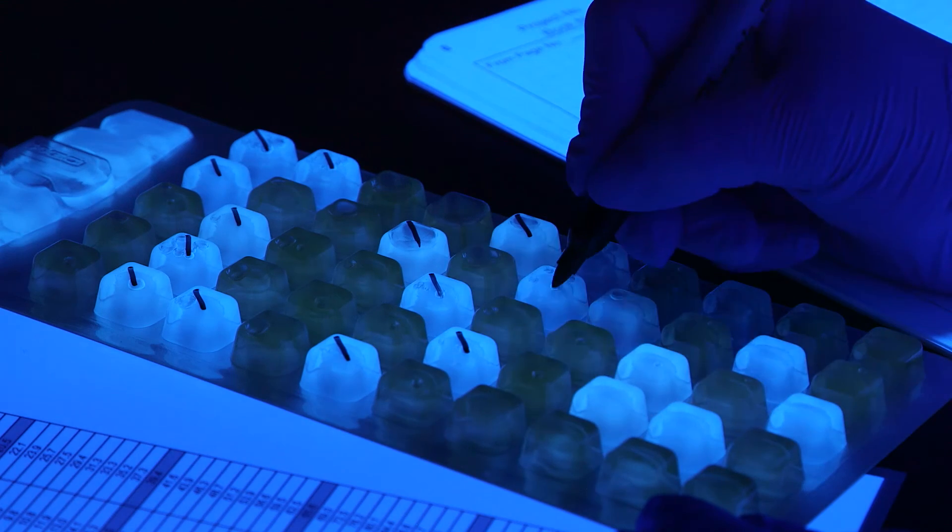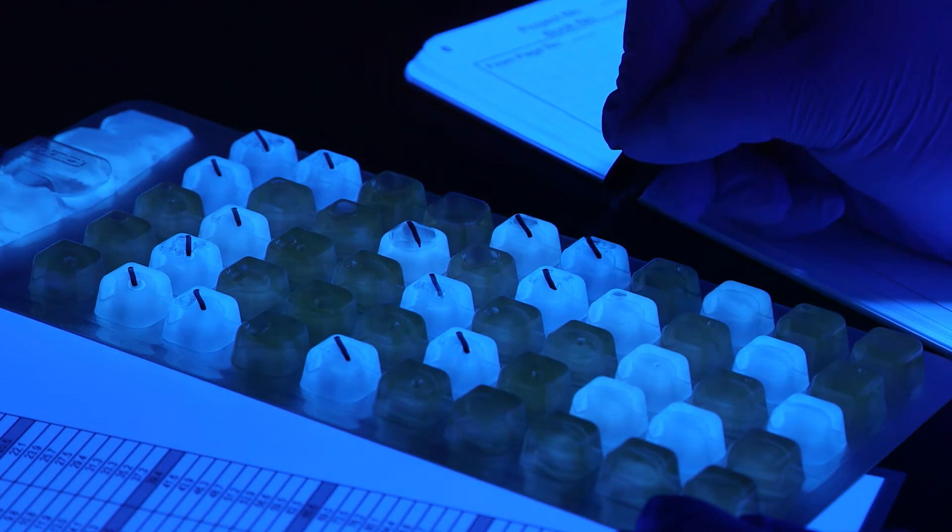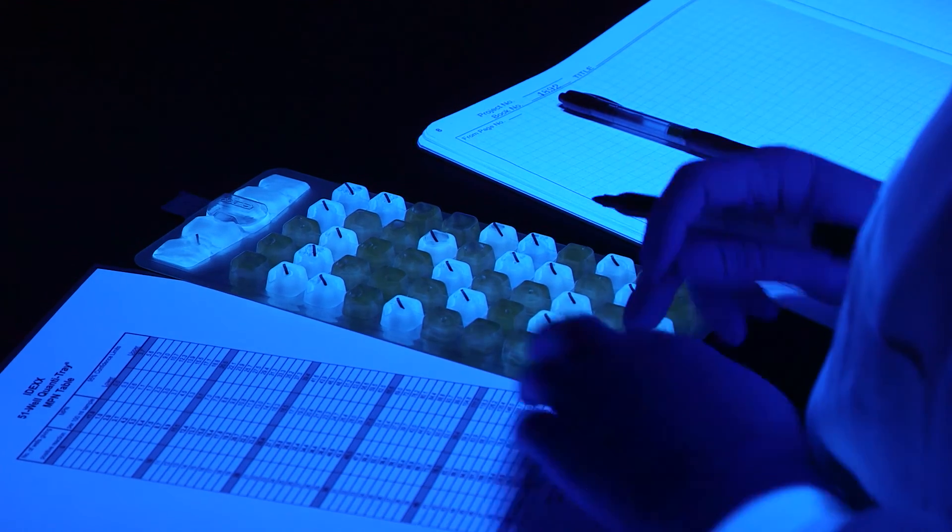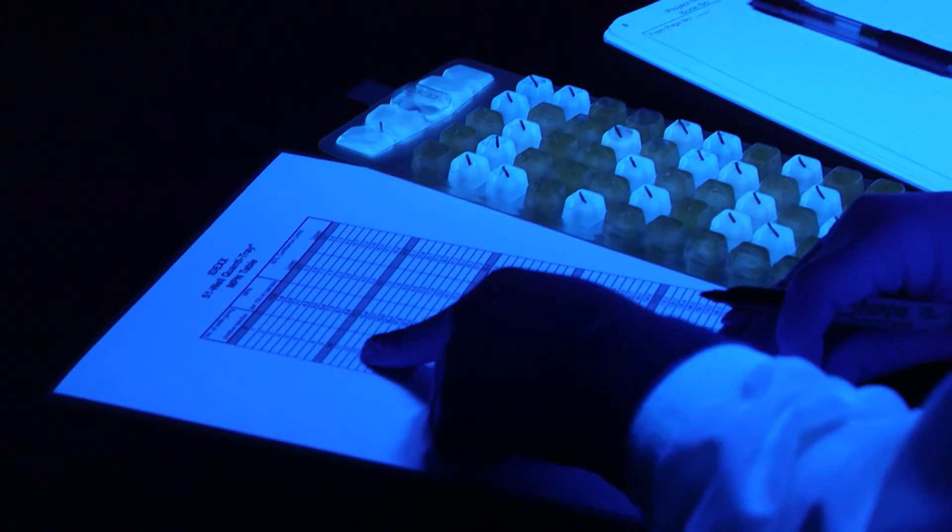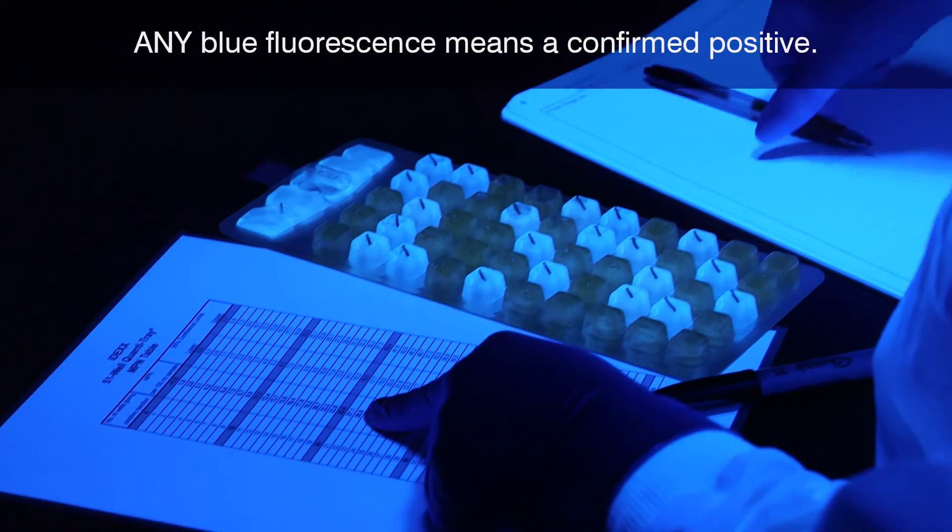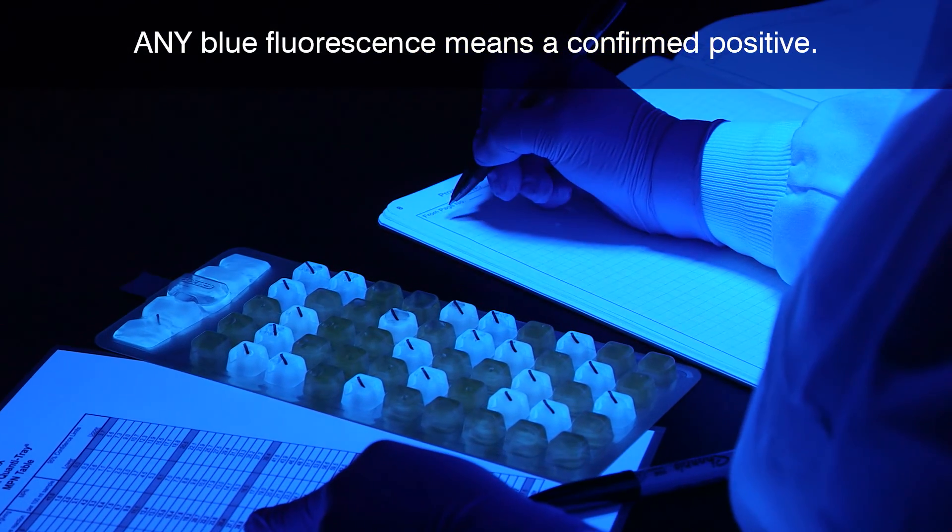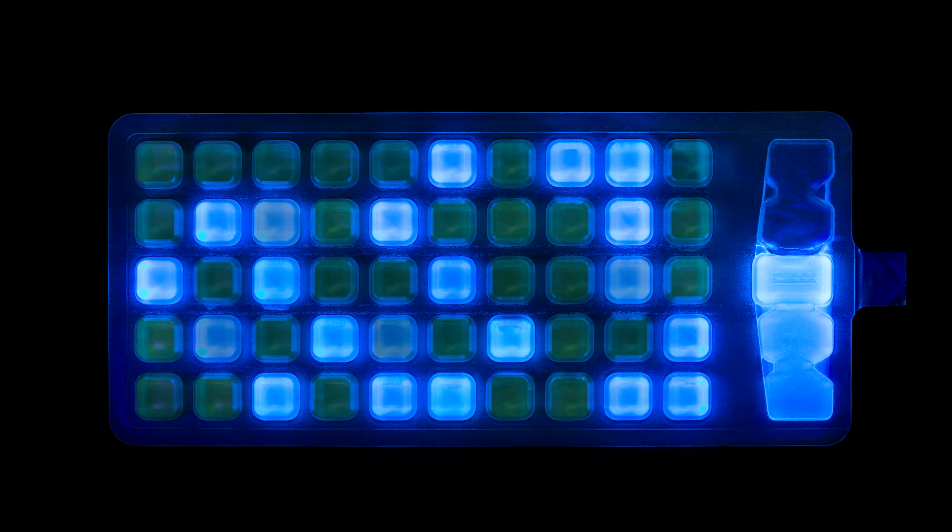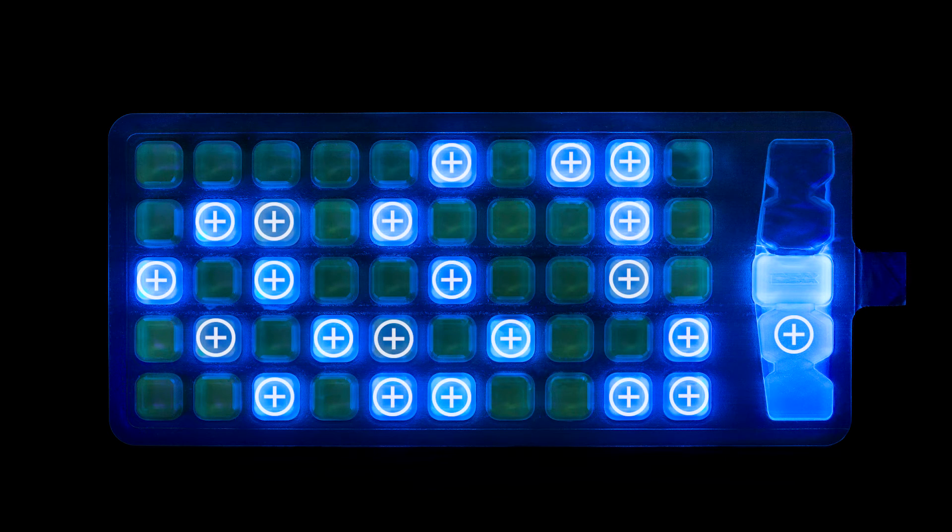Count the marked wells and then refer to the MPN table included with the Quantitrays. The most probable number for this example is 28.8 per 100 ml. If using Quantitray 2000, count the overflow well as a large well. Any blue fluorescence means a confirmed positive for enterococci. Here is an example with both strong and weak fluorescence. There are a total of 22 fluorescent wells.